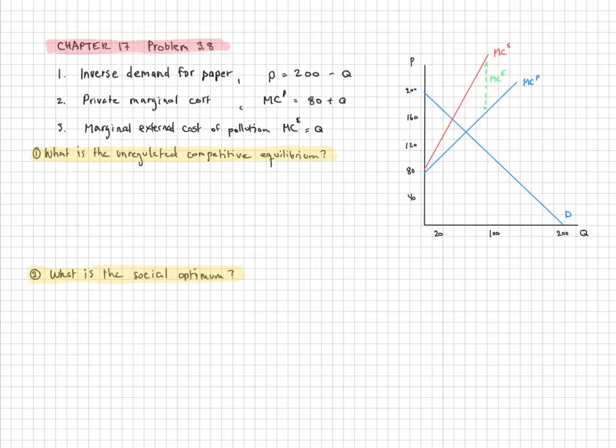In this problem, we are given an inverse demand curve for paper, P equals 200 minus Q. The private marginal cost for a paper producer is marginal cost P, 80 plus Q. And there is a negative externality here, so the marginal external cost of pollution from paper production is marginal cost E equal to Q.